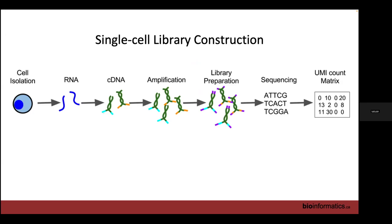Trevor nicely covered most of this already, but we start with our single cells, extract the RNA, convert that to cDNA, amplify it, generate a sequencing library, sequence it to get a bunch of reads, and then we quantify those reads to generate a UMI count matrix. We have cells by genes, and we have the count of the number of different molecules we saw for each gene in each cell.